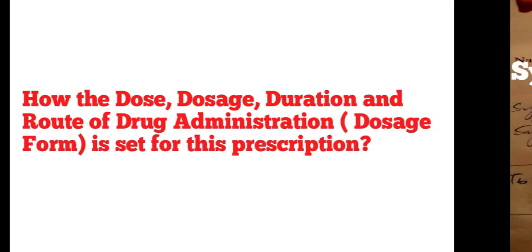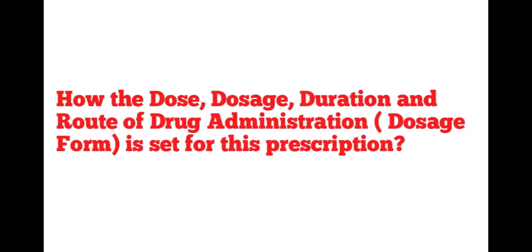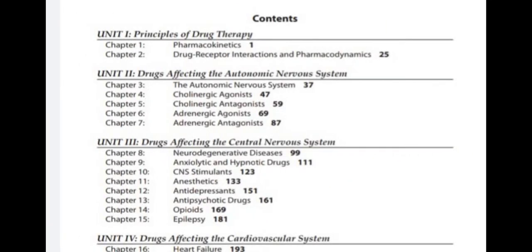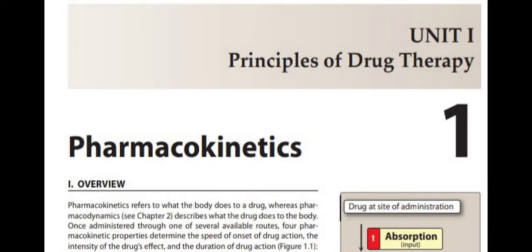Now the question arises: how are the dose, dosage, duration, route of drug administration, and dosage form determined for this prescription? The answer is by using pharmacokinetics — yes, you heard that right! Today's content is pharmacokinetics, from Chapter 1 of Unit 1: Principles of Drug Therapy. Today's lecture is an overview of pharmacokinetics.